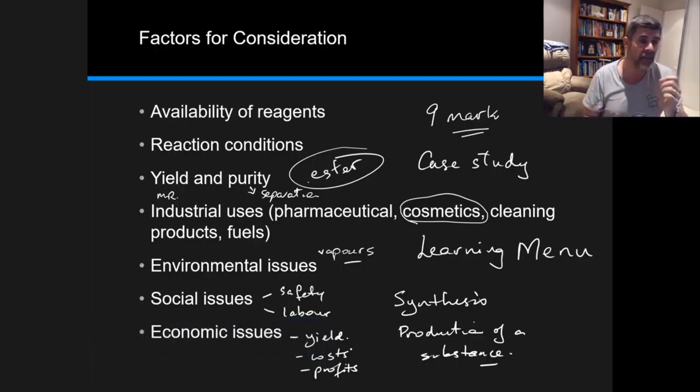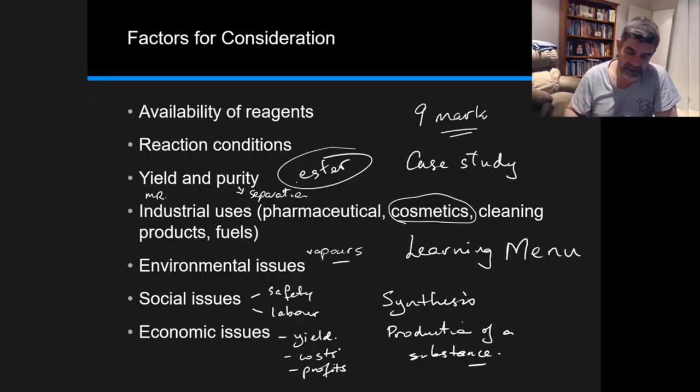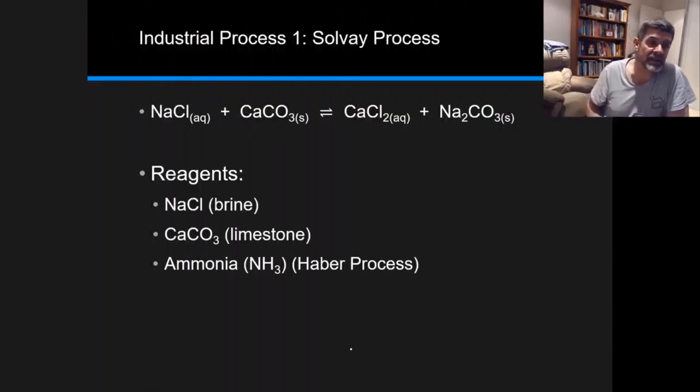Let's look at one example and pick the first of these: the availability of reagents. One important process is the Solvay process, and the goal product of the Solvay process is sodium carbonate.